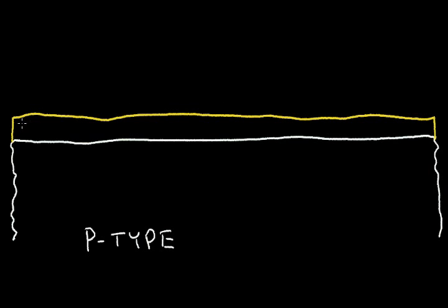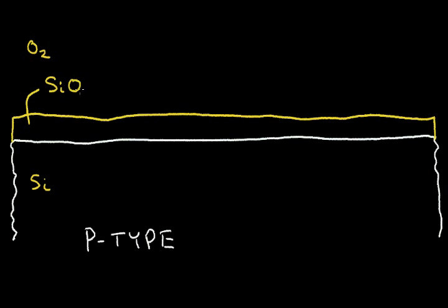This silicon dioxide is the same as glass. If I put an atmosphere of oxygen over the silicon, this oxygen can be combined with the silicon and create glass, or silicon dioxide.